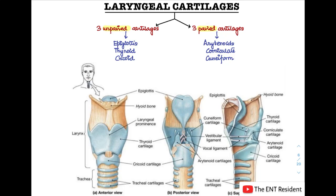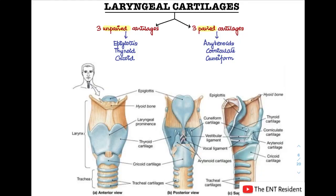The first topic is the laryngeal cartilages. Laryngeal cartilages can be divided into two types: three unpaired and three paired cartilages. The three unpaired cartilages are the epiglottis, the thyroid cartilage and the cricoid cartilage, whereas the three paired cartilages are the arytenoid cartilages, the corniculate cartilages and the cuneiform cartilages.